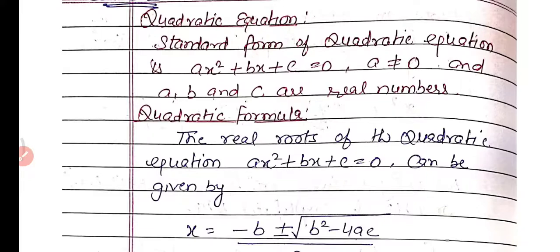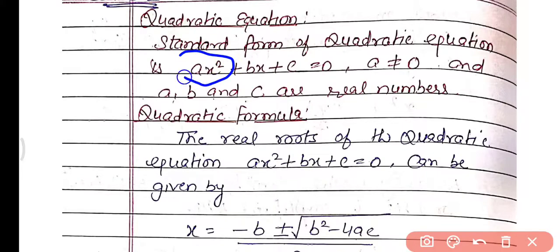First of all, you know what the quadratic equation is. The standard form of quadratic equation is ax² + bx + c = 0, where a is not equal to 0. If a is equal to 0, then the whole first term is 0 and the remainder bx + c is a linear equation. So the condition is that the coefficient of x² is not equal to 0, so that we have a quadratic equation.